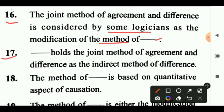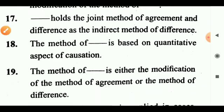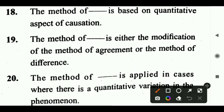Question 17: Dash holds the joint method of agreement and difference as the indirect method of difference. Answer: J.S. Mill holds the joint method of agreement and difference as the indirect method of difference. Question 18: The method of agreement and difference is based on the quantitative aspect of causation. Answer: Concomitant variation.